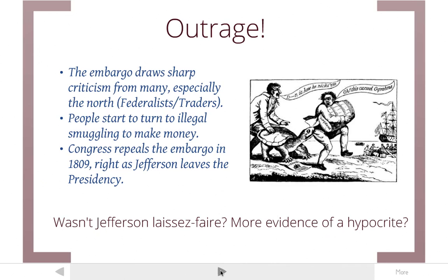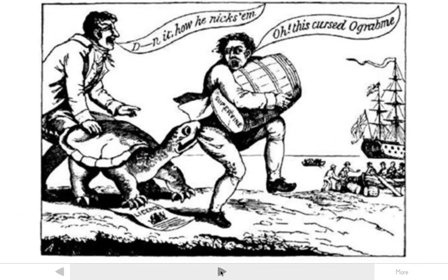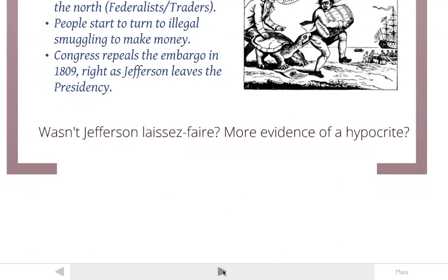Congress realizes after two years that this plan is not working and is causing hardship across the country. They lift the embargo in 1809, right as Jefferson is leaving the presidency. There's a cartoon from the time period mocking the Embargo Act — it reads 'Oh, this cursed Ograbme,' which is 'embargo' spelled backwards. Some people see this as evidence of Jefferson being a hypocrite because he goes against his laissez-faire beliefs.